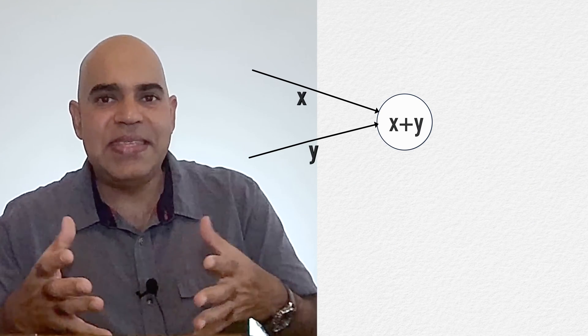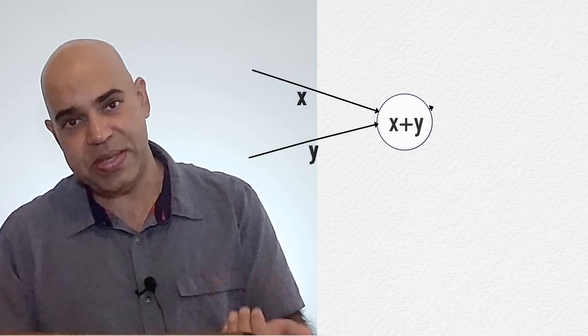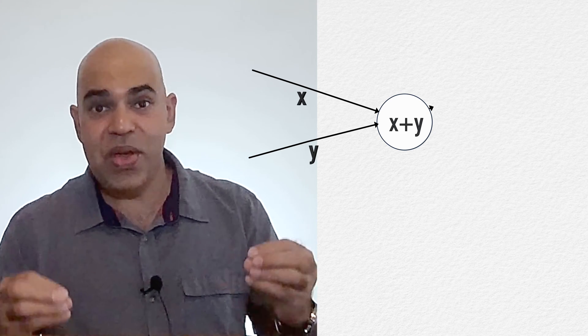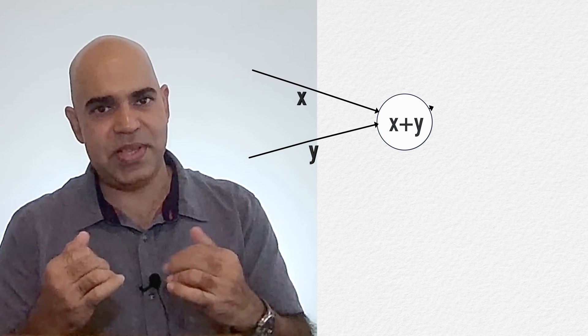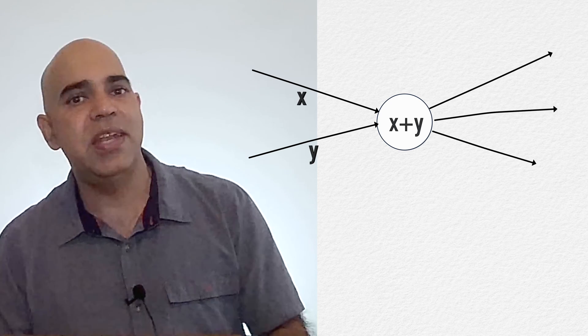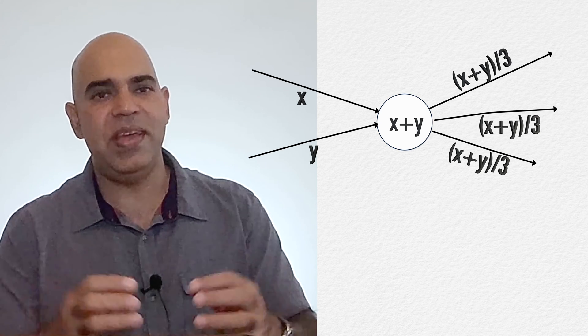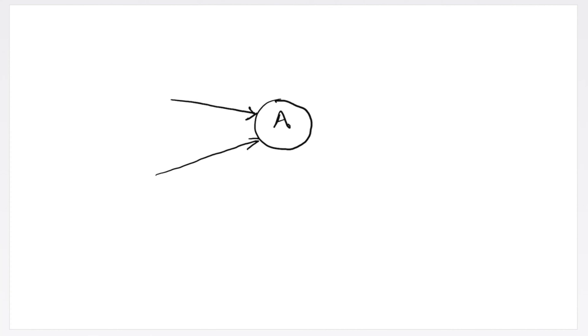The PageRank principle is established on the assumption that the importance of a website is the summation of importance factors it receives via incoming hyperlinks. Also, whatever importance values come to a website via incoming links go out of that website via outgoing links. For example, if a website has two incoming links, some other two websites are giving parts of their importance to that website.